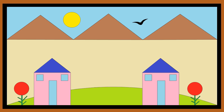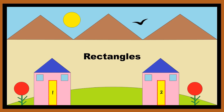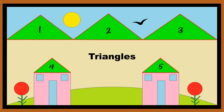Let us count the number of four shapes one by one in this picture. There are six squares, two rectangles, three circles and five triangles.